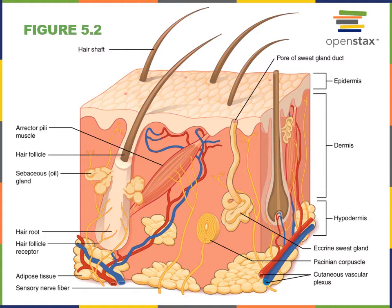The primary function of the cutaneous membrane is to create a protective barrier around the body. The cutaneous membrane contains keratin, a protein produced by cells of the epidermis that provides physical strength to the cutaneous membrane. The superficial layers of the epidermis are composed of dead cells filled with keratin that are held tightly together, providing physical strength to prevent abrasion from damaging the epidermis.